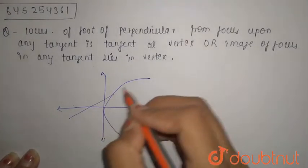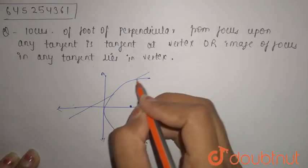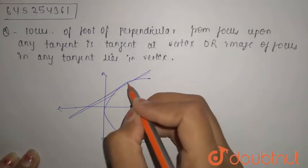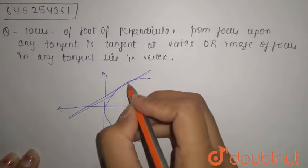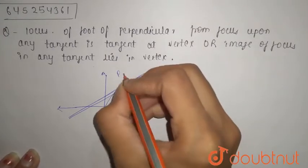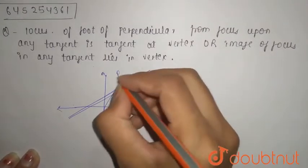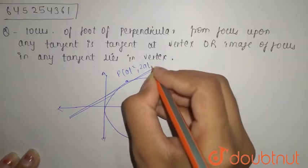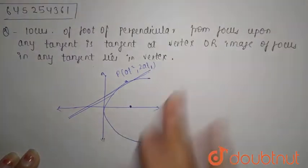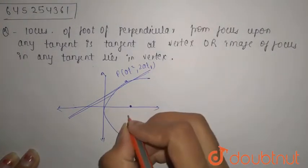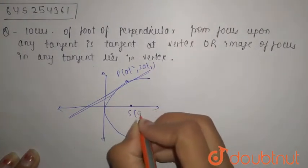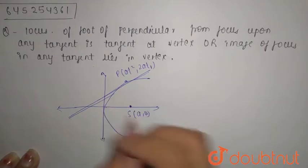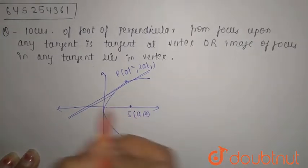You can say that this is a tangent to it. The point at which it touches, let it be point P, which is (at₁², 2at₁). This is point P, and this is S at (a, 0). This is your origin.